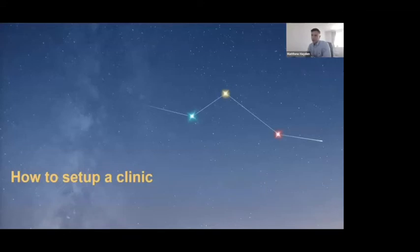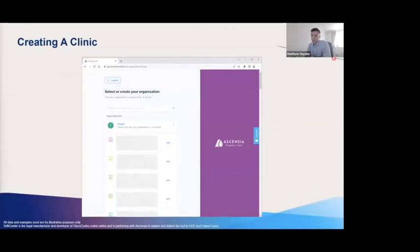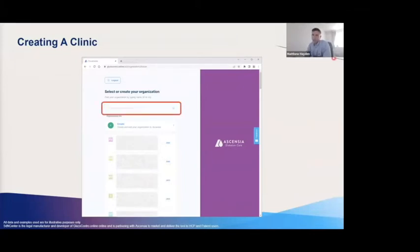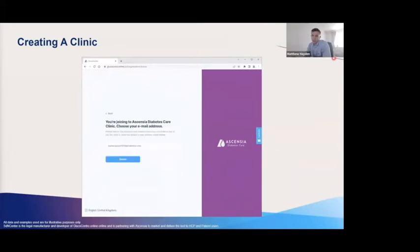Now that you are set up, you will need to either join an existing clinic if a fellow healthcare professional has already created one, or create a new clinic if you are the first. If a colleague has already created the clinic, all you have to do is find it from the list of clinics shown and click request to join. There is also a search bar facility if you can't find the clinic. Once found, you confirm your email address and the clinic administrator receives a notification and will then approve your request. Once approved, you are part of the clinic and can access all the people with diabetes linked to it.